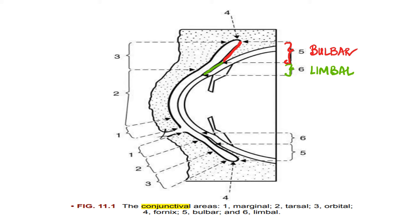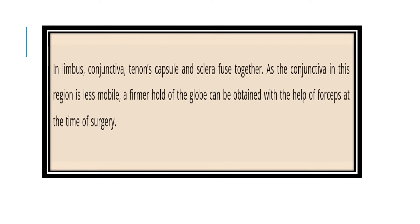There is a scleral part covering the sclera and a limbal conjunctiva covering the limbus area. At the limbus, the conjunctiva, Tenon's capsule, and sclera are all fused together and very firmly attached, making the conjunctiva much less mobile in this region. This gives a very firm hold of the globe with forceps during surgery, allowing you to stabilize the globe at the time of surgery by holding it at the limbus.